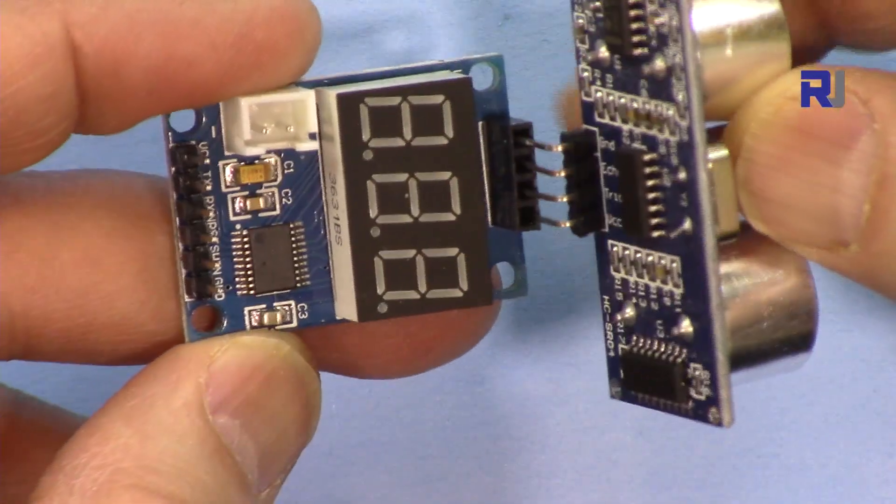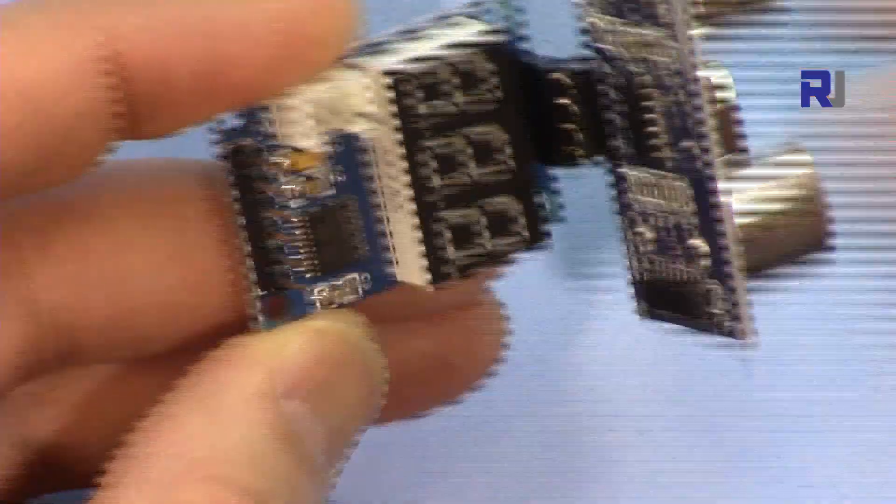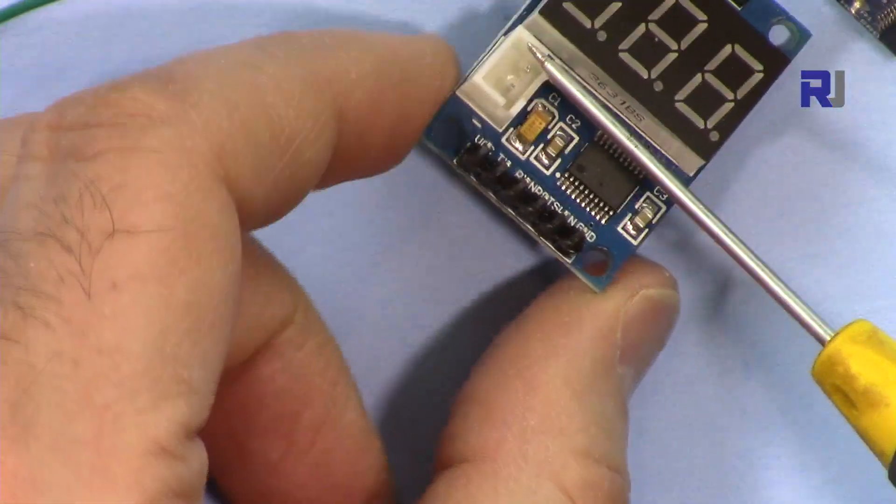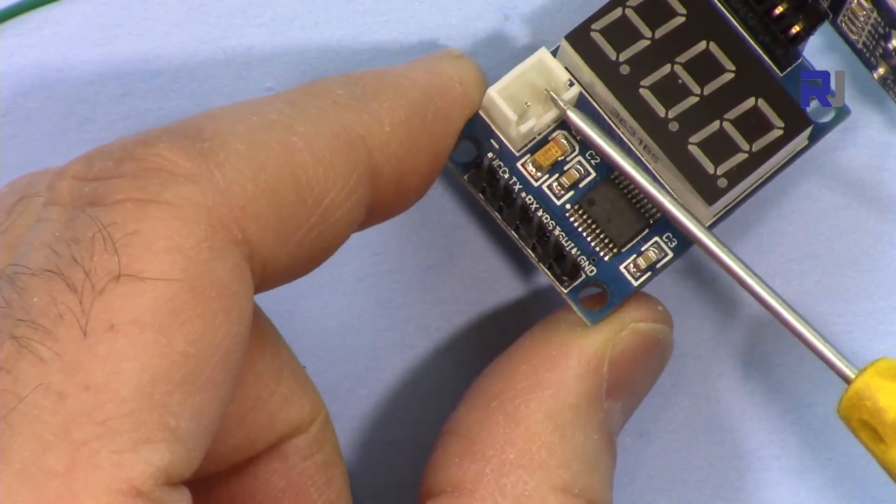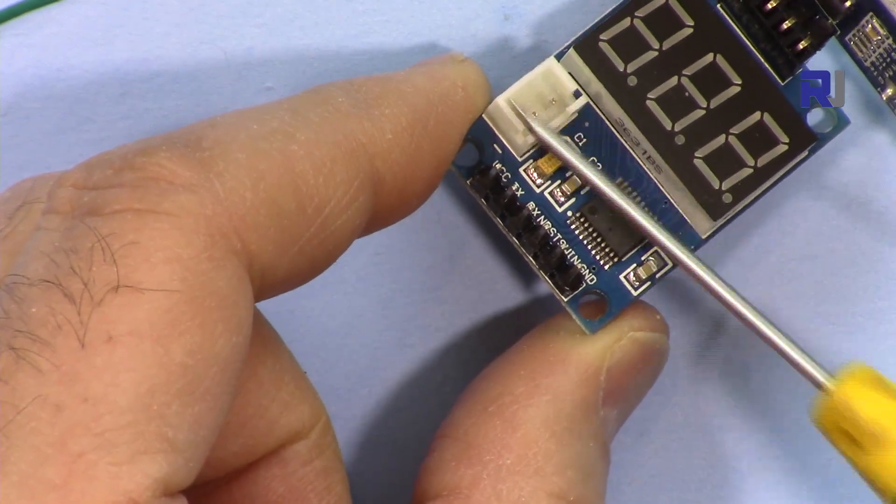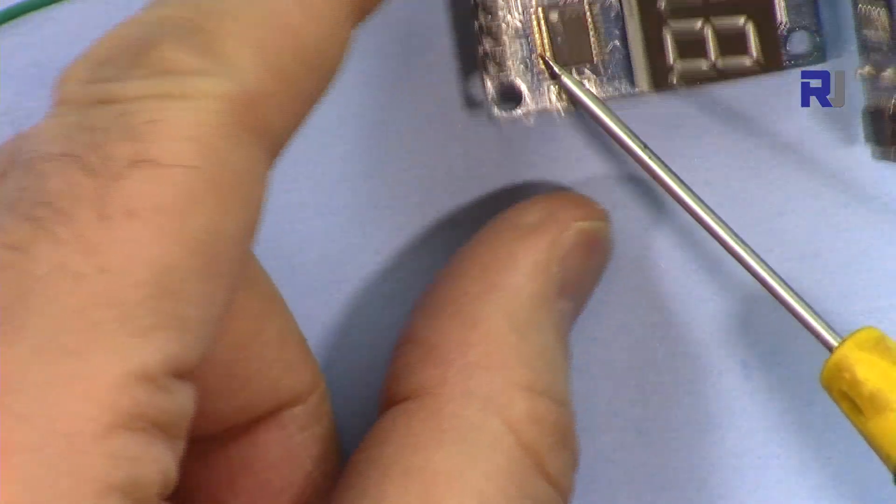We have four pins for the ultrasonic sensor here. We also have a DC connector in case you don't want to use it. You can connect this connector on this side. However, we have multiple connections.